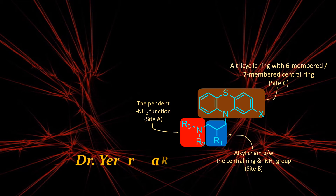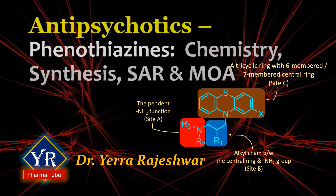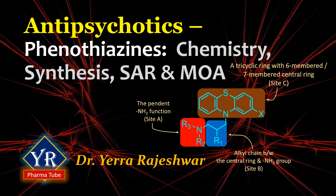Hey guys, welcome back. This is Dr. Rajeshwar from YR Pharma2. In the preceding video, we discussed about the introduction, classification and clinical uses of antipsychotic drugs. If you did not watch that video, hit the i button on the top right to watch it. To watch other topics of medicinal chemistry, click on the links below. In this lesson, we shall learn the first type of antipsychotic drugs known as phenothiazines - their chemistry, synthesis, structure-activity relationships and mechanism of action.